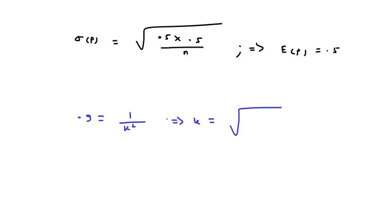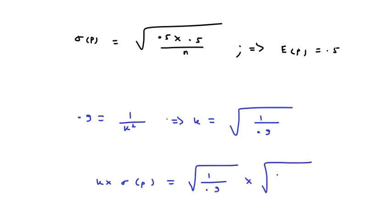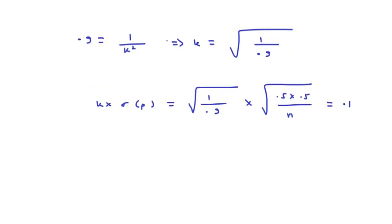Finally, k = √(1/0.1) and k·σ_p = k·√(0.5 × 0.5 / n) = 0.1. On solving further, n = 50/9 ≈ 5.55, so n is approximately 6. Now I will solve Part 2.